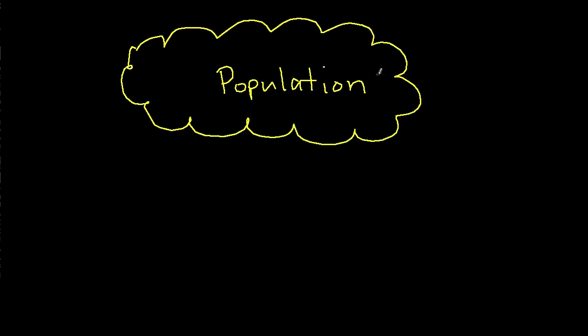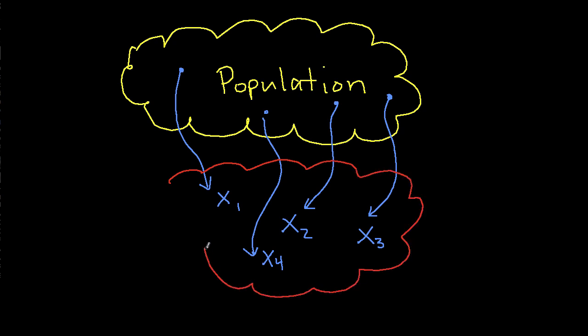I have a population. This population may be a collection of objects, people, or something else about which I would like to learn something. From this population, I randomly select members and get measurements.